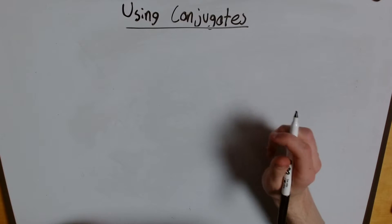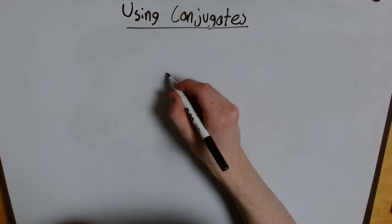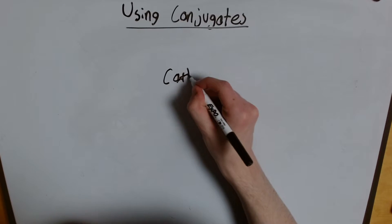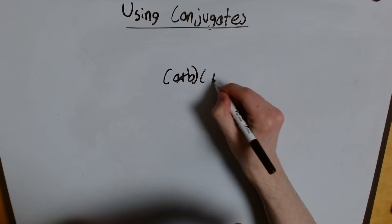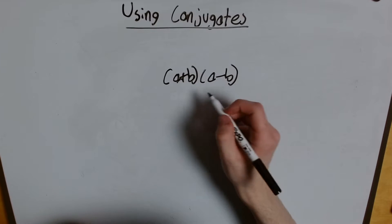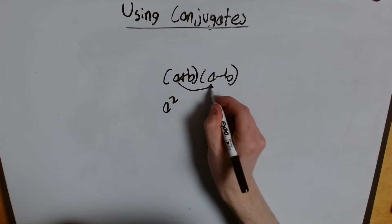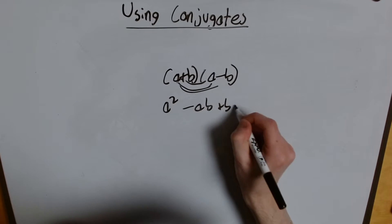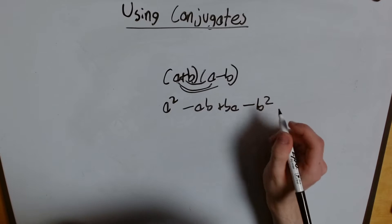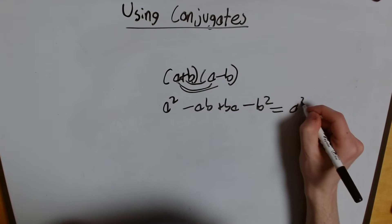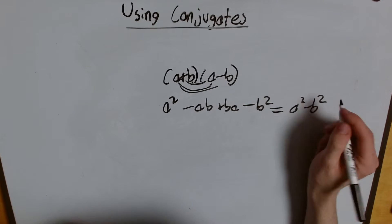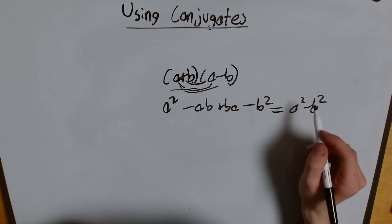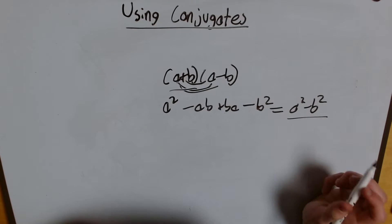Because when we multiply something by its conjugate, let's say I'm multiplying a plus b by its conjugate, or a minus b, and I just read this out, so that's a squared minus ab plus ba minus b squared, I get a squared minus b squared. So when we multiply something by its conjugate, we get squares like this.